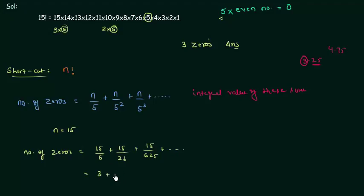From here I will have 0.6 and this will also give us a decimal part for the sum which we don't want. So we can stop here and we can include this 3 only because this is the integral value that we are getting from this sum. And hence number of zeros is equal to 3 that we have already evaluated by counting number of 5.